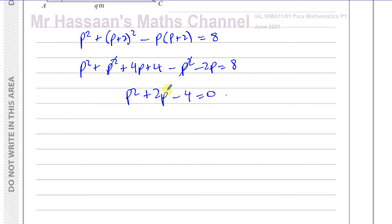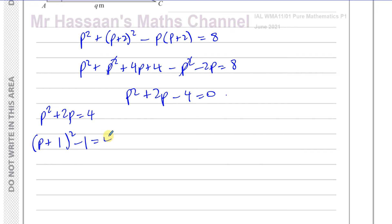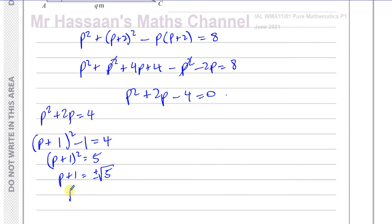First, completing the square. I rearrange to P squared plus 2P equals 4. Completing the square gives (P plus 1) squared minus 1 equals 4, so (P plus 1) squared equals 5. Taking the square root of both sides gives P plus 1 equals plus or minus root 5, so P equals minus 1 plus or minus root 5. Those are the possible values of P.